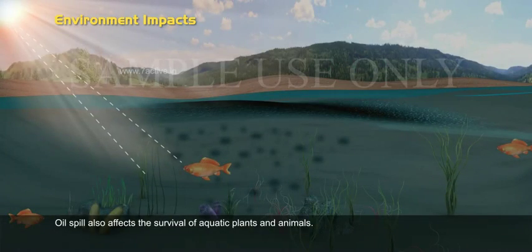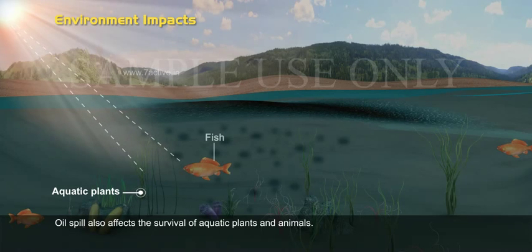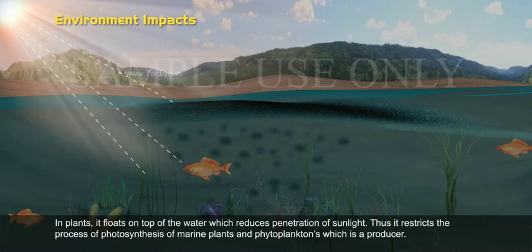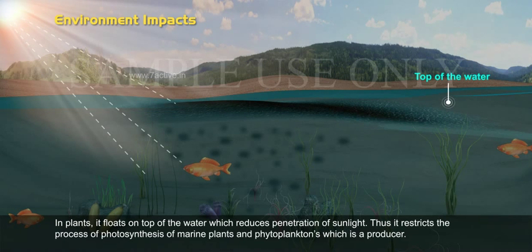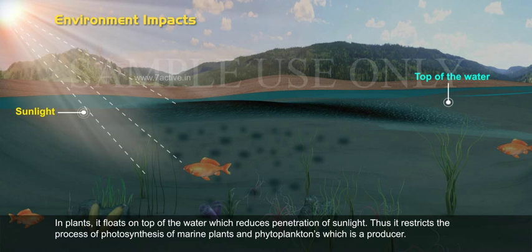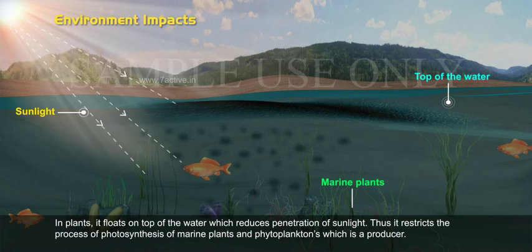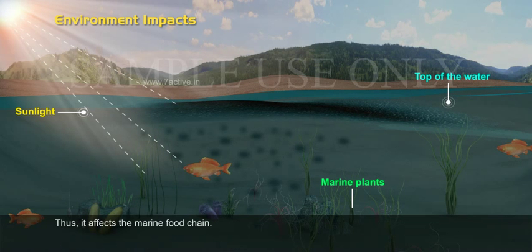Oil Spill also affects the survival of aquatic plants and animals. In plants, it floats on top of the water which reduces penetration of sunlight. Thus, it restricts the process of photosynthesis of marine plants and phytoplanktons, which are the producers. Thus, it affects the marine food chain.